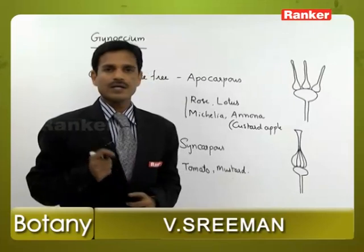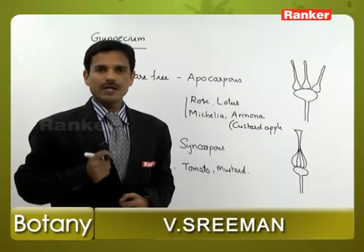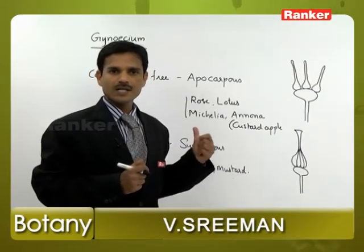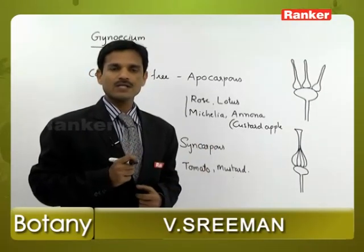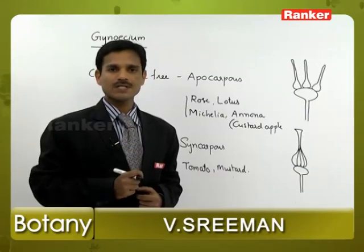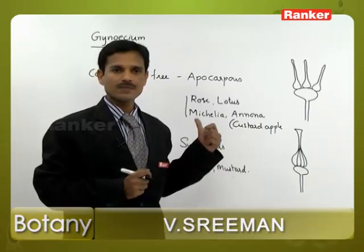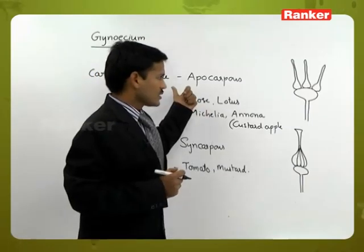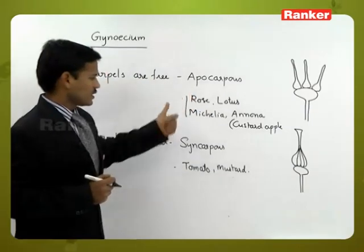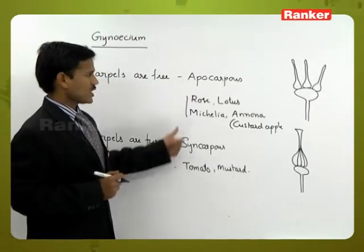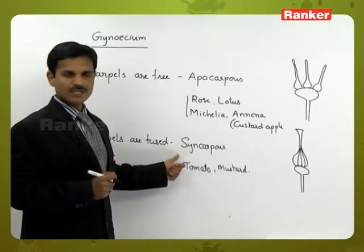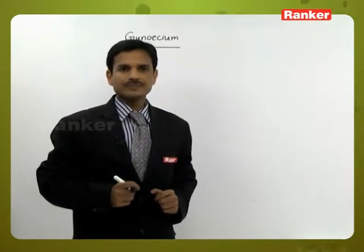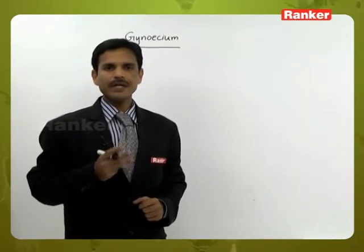Gynoecium is a female reproductive organ composed of a number of carpels. Sometimes only a single carpel is present. Sometimes the carpels are free — Apocarpous condition — and sometimes they are fused — Syncarpous condition. In the Gynoecium, mainly three parts are present.